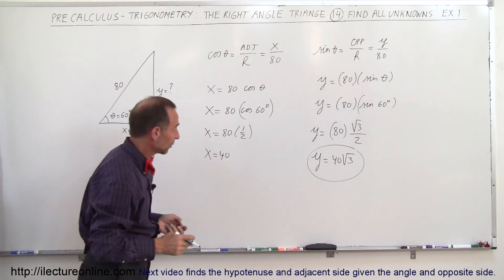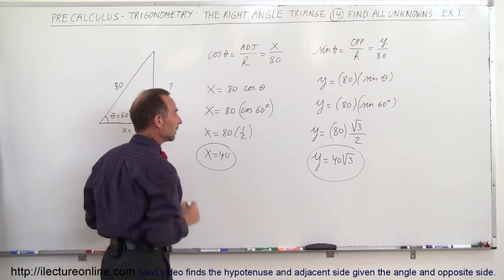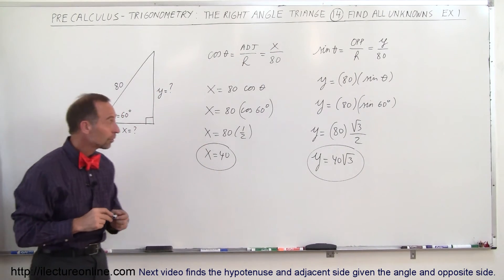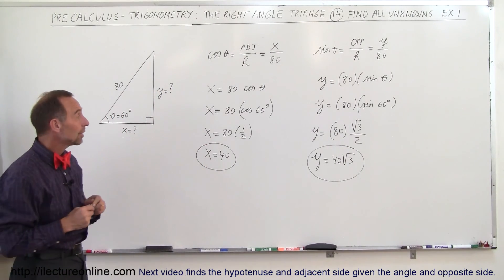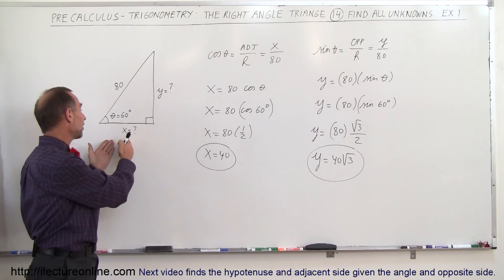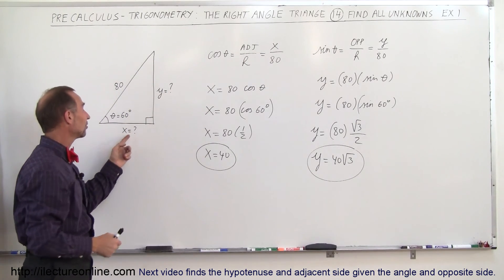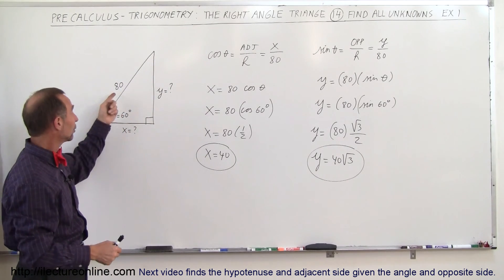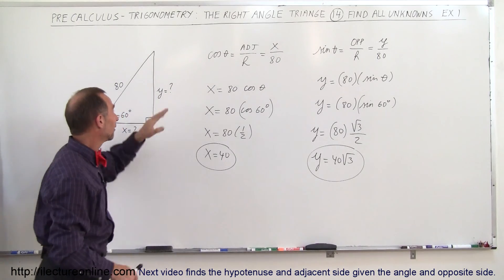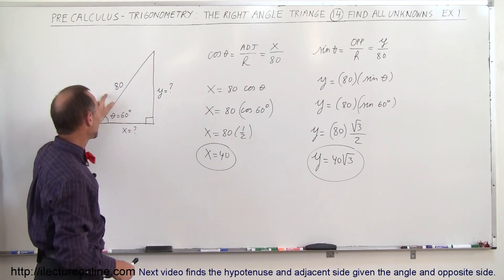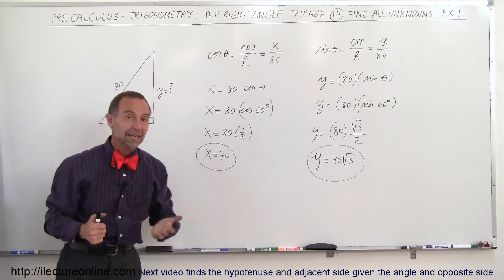And of course, with a calculator we can find an approximate answer by simplifying the square root of 3. But anyway, that's how we do that. So in this case we're looking for the adjacent side and the opposite side. For the adjacent side, if you know the angle and you know the hypotenuse, use the cosine.